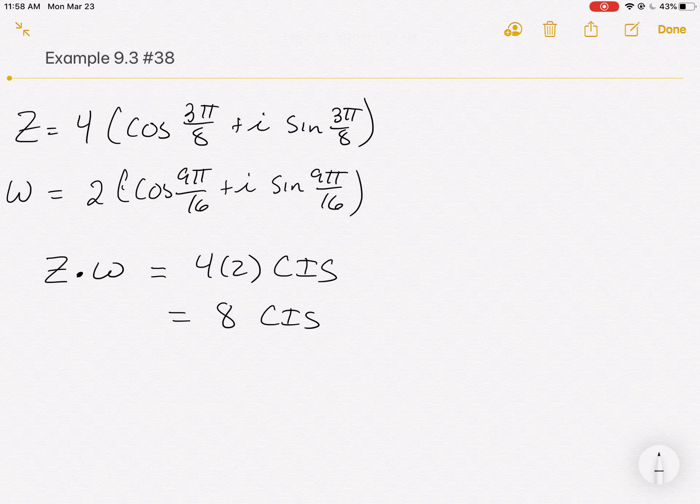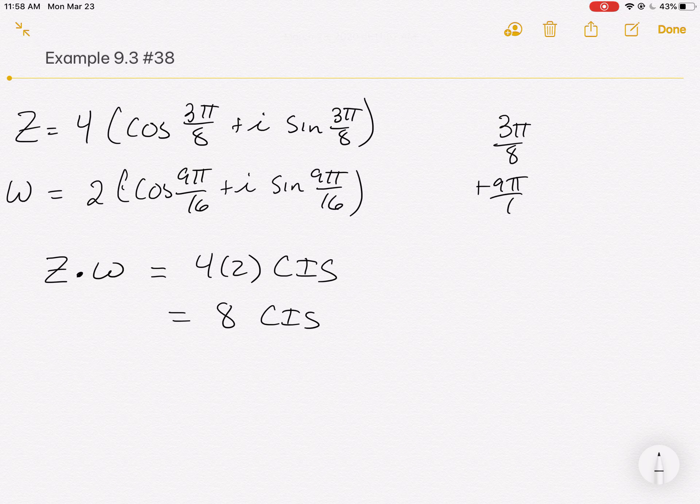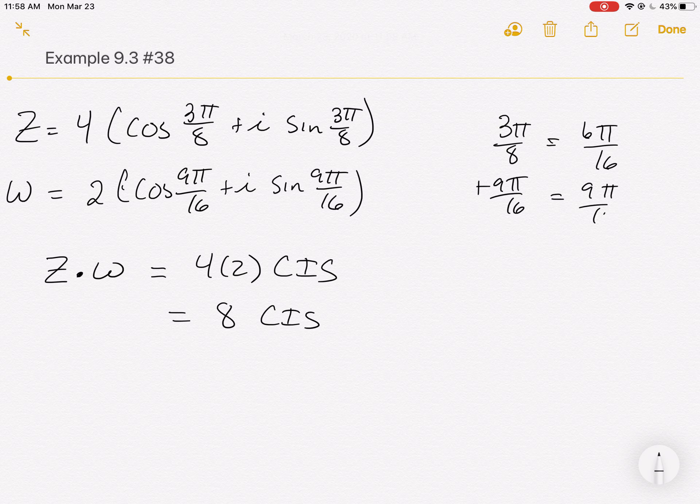Well, that new angle is going to be the addition of those angles. So we had 3π over 8 plus 9π over 16. And it doesn't matter what order we add. But technically, it's in that order. And so I've got to get this over 16. So this is 6π over 16. And this is 9π over 16. And if I add those together, we get 15π over 16.